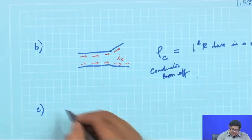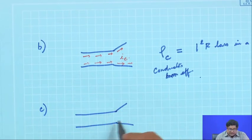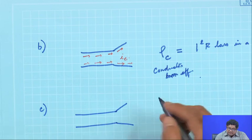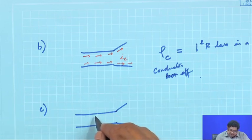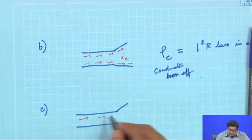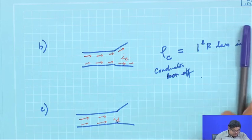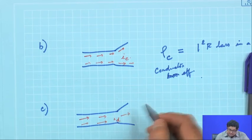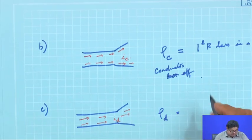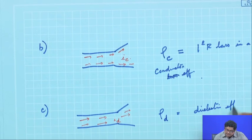Similarly, there will be power dissipation in the dielectrics. Even if nothing is there, there is air as a dielectric, and in many antennas there are various dielectric materials. The displacement current through them — the dielectric current I_d — gives rise to dielectric loss, resulting in a dielectric efficiency ρ_d.